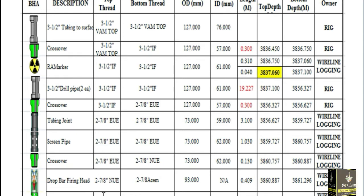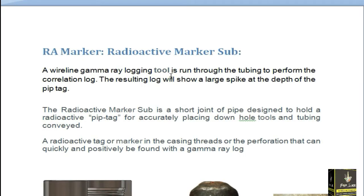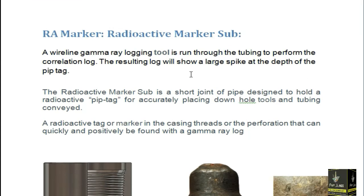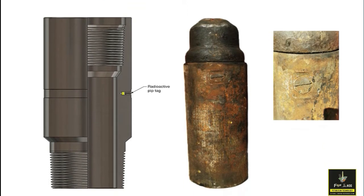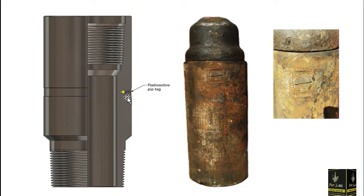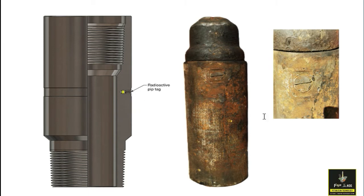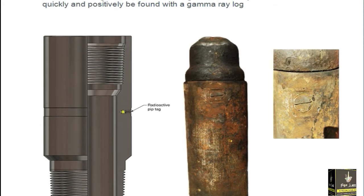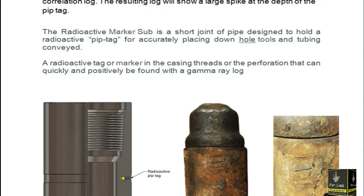The RA marker is a radioactive marker sub. It is a wireline gamma ray logging tool. When we run the gamma ray logging tool inside the tubing, it performs correlation — the resulting log will show a large spike at the depth of the pig tag. This tool is known as the RA marker, and this small component is known as the pig tag. When the gamma ray tool passes this tool, it creates a high radioactive spike showing where the RA marker tool is located.